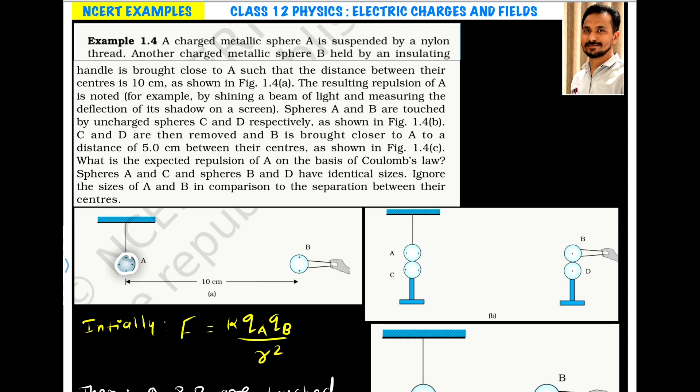Let us assume sphere A has charge QA and sphere B has charge QB, and they are separated by distance R equals 10 centimeters. The Coulombian force between them or electrostatic force is given by the equation K QA QB by R square.